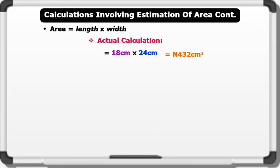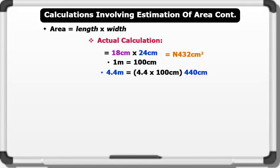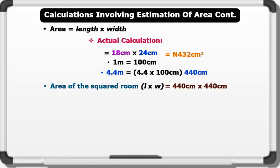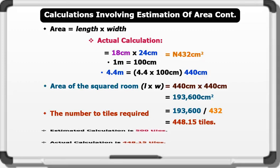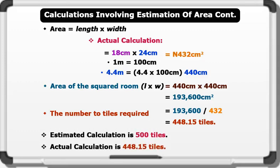Let's calculate the area of the room. Remember that 1 meter equals 100 centimeters. Therefore, 4.4 meters equals 440 centimeters. Area of the square room equals 440 centimeters times 440 centimeters, which equals 193,600 centimeters squared. The number of tiles required equals 193,600 divided by 432, which gives us 448.15 tiles. Comparing the two answers, we can say that the estimate is a good guide.